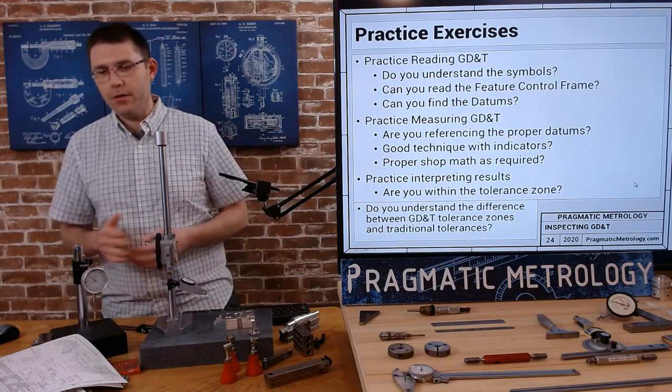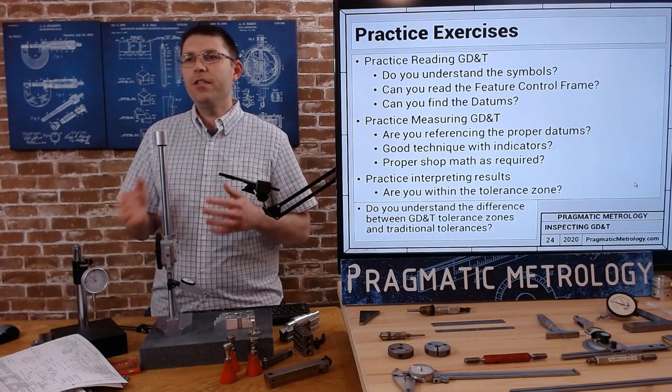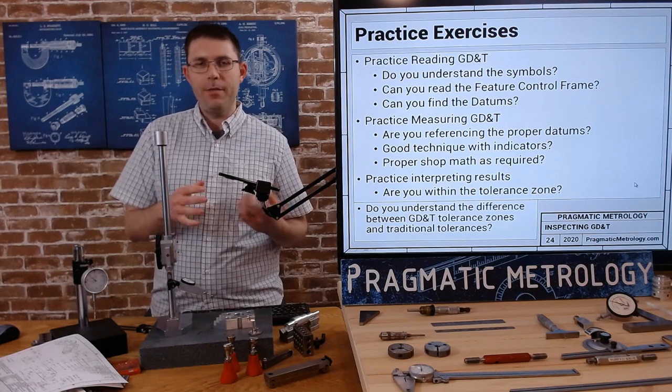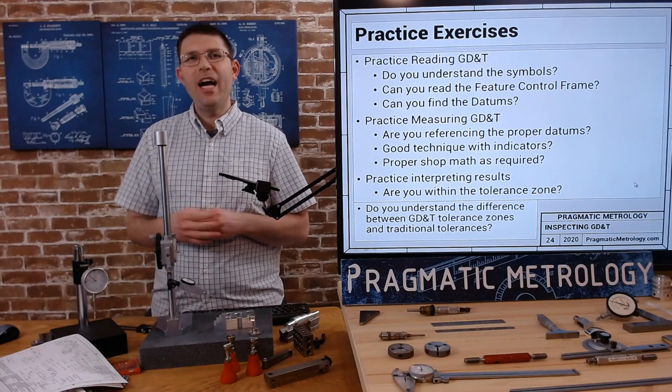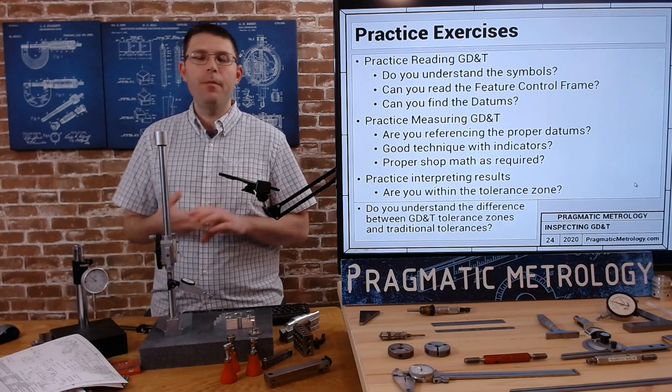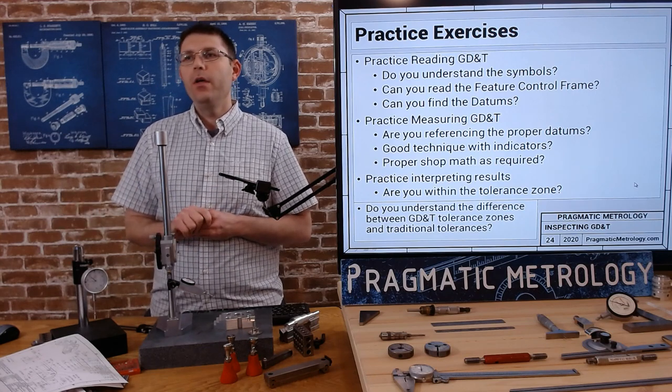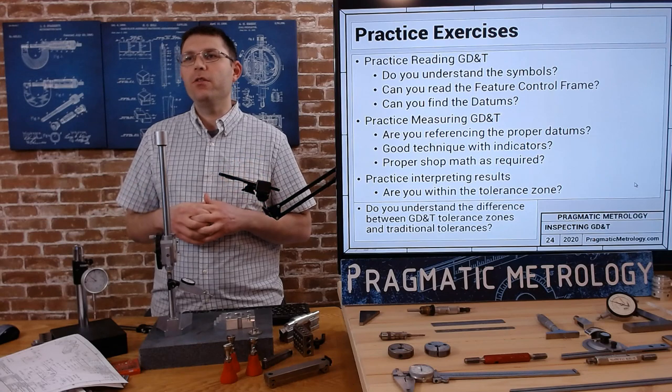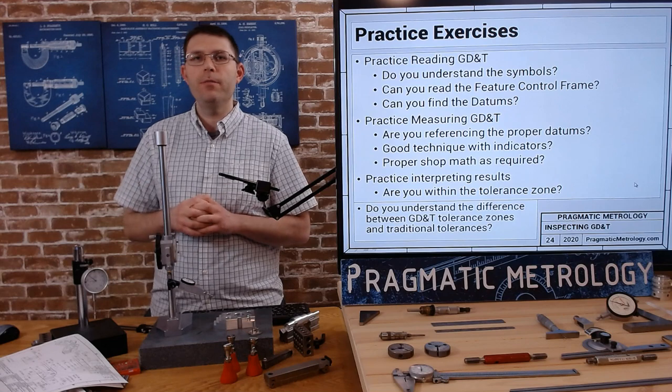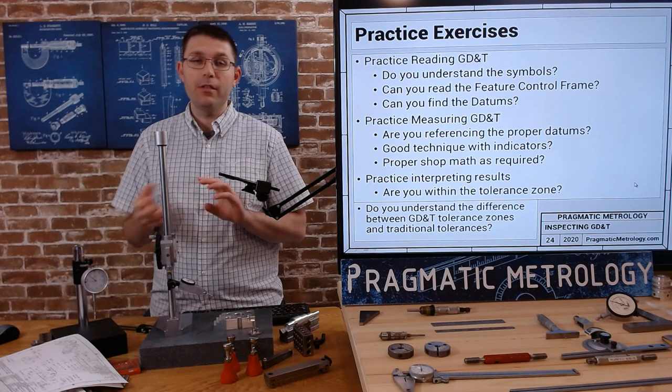At this point I would normally break out some practice exercise videos and questions and things to do, but this video's a little bit different. I basically did the practice exercises while I explained the topics back and forth, and I really don't have anything new to show you. So I would say just grab a part, grab a print, study the callouts and practice with the tools that you have. Then answer these questions: Do you understand the symbols, do you know what they mean, do you have them memorized, do you have a quick cheat sheet nearby? Can you read the feature control frame, all the pieces?